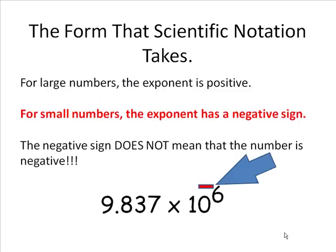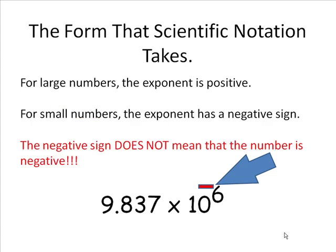If the exponent is negative, and this is not necessarily negative, but if there's a negative sign in front of the exponent, the negative sign does not mean that the number is negative. It simply means that the number is small.